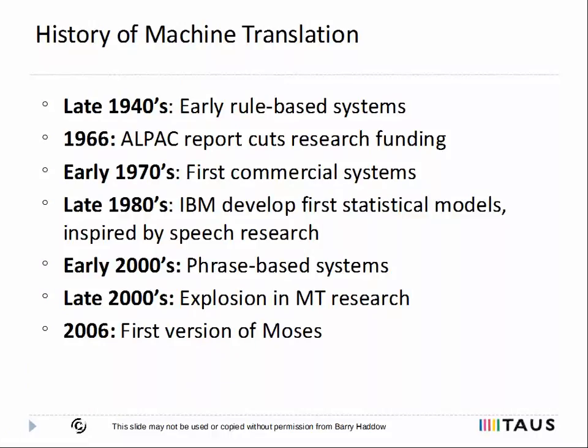The field of machine translation research is almost as old as the field of computing research itself, for soon after the first computers were developed in the 40s, people asked if it was possible for them to translate human languages. This was based on recent advances in linguistics, and also the success on code-breaking in the Second World War. For instance, Warren Weaver, in his famous memorandum of 1949, likened the translation of Russian to English as the reading of a secret code.